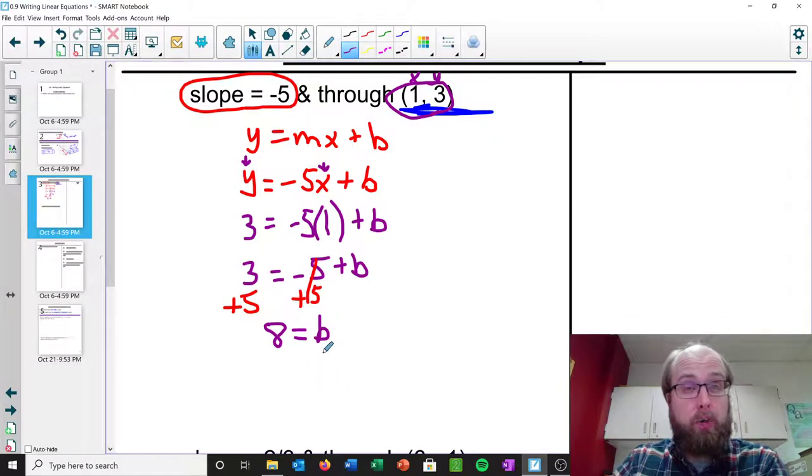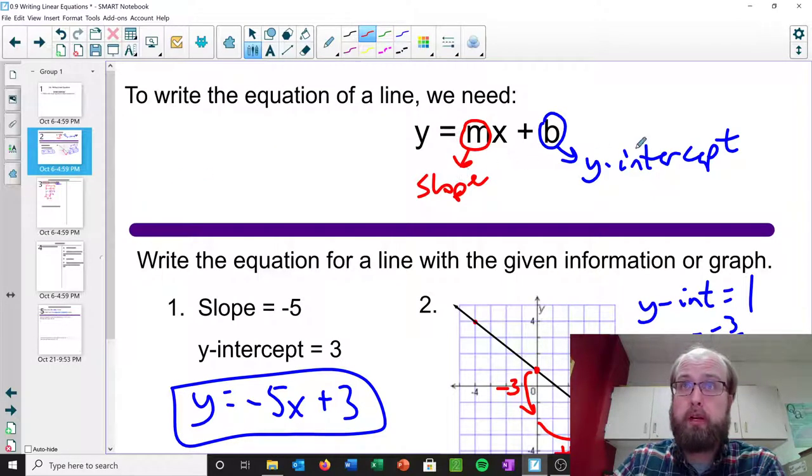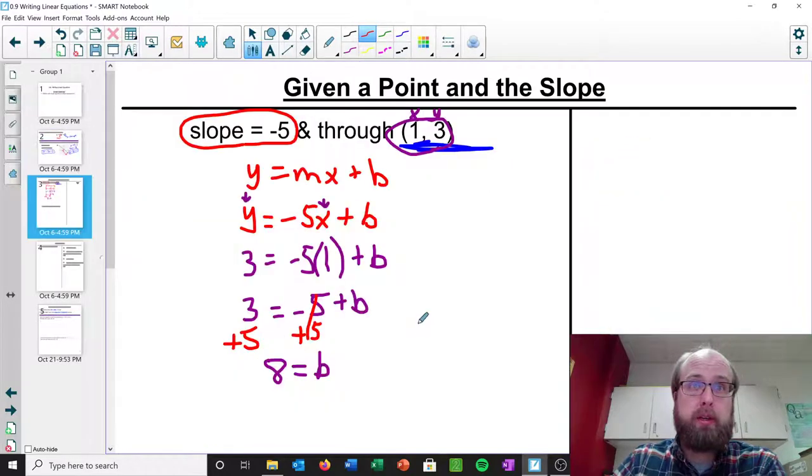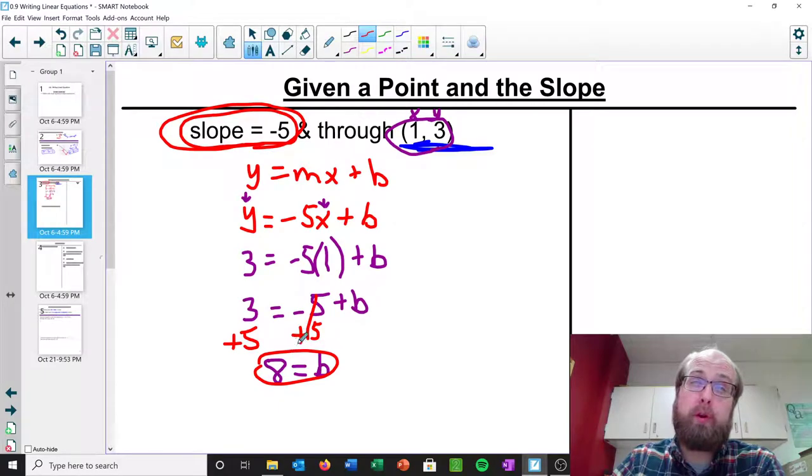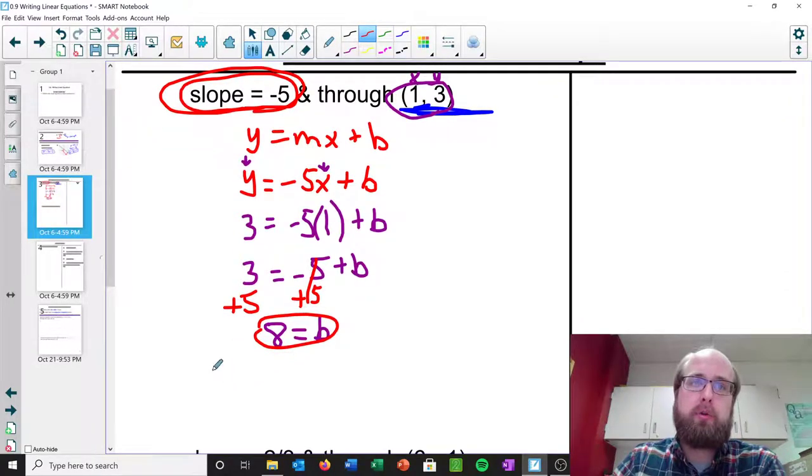And now we have all the information we need, because remember, what are the two things we need? We need slope and we need y-intercept. Well, what do we have? We have the slope that was given to us originally, and now we have the y-intercept, because we solved for it. We put this in temporarily, just so we can figure out what that is. And so what's our equation? Well, it's y equals negative 5x plus 8.